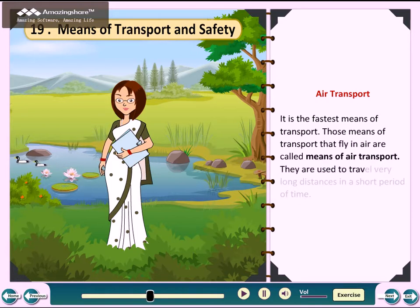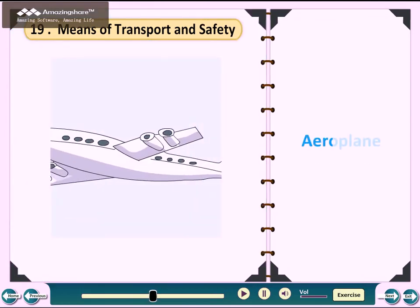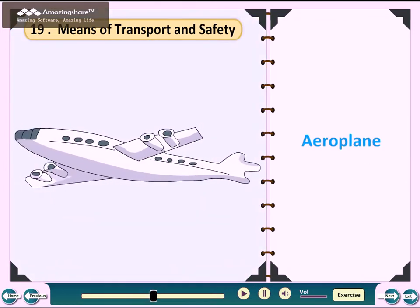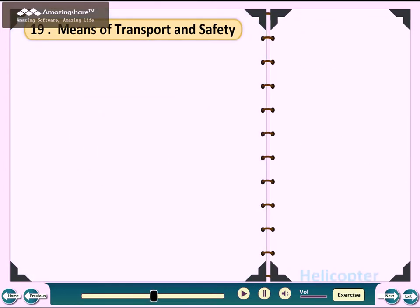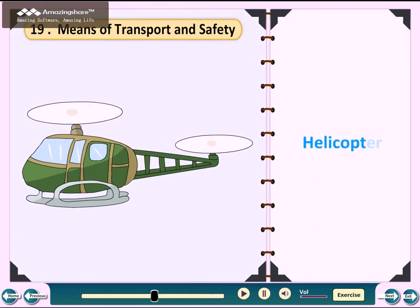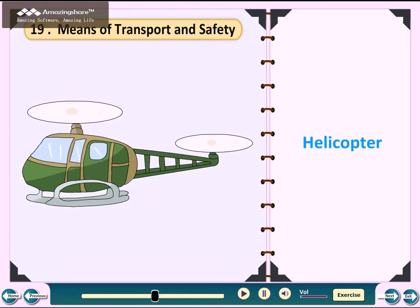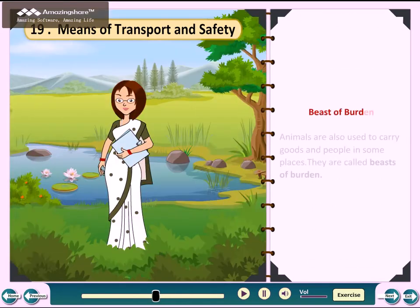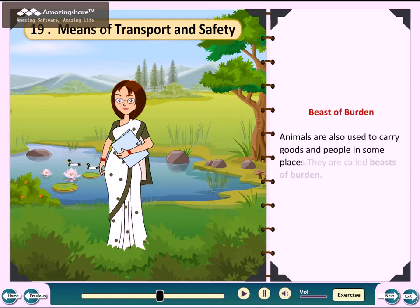Air Transport: It is the fastest means of transport. Those means of transport that fly in the air are called means of air transport. They are used to travel very long distances in a short period of time. Examples include aeroplane and helicopter.